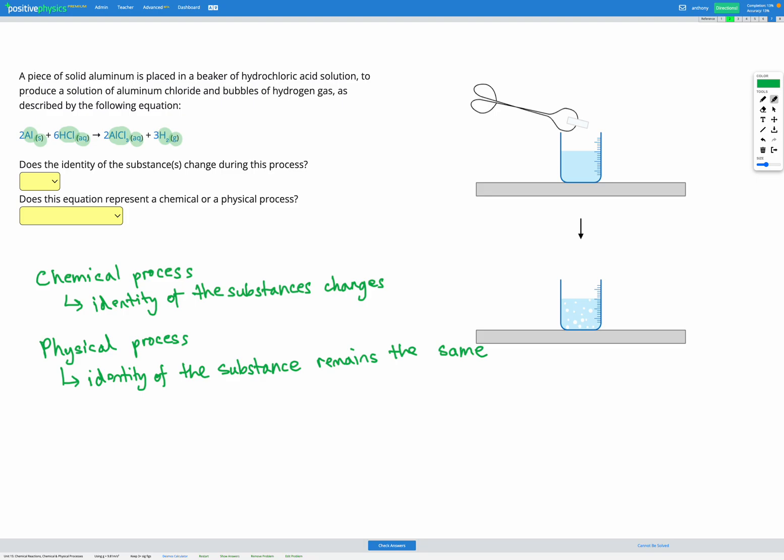So there's a lot going on here. If we look at our states we can see we start with a solid and something that's aqueous and we end up with something that's aqueous and a gas. So some of the states are changing in this process. However if we actually look at the identity of each thing we start with aluminium and hydrochloric acid. But at the end those elements have rearranged themselves into different compounds.